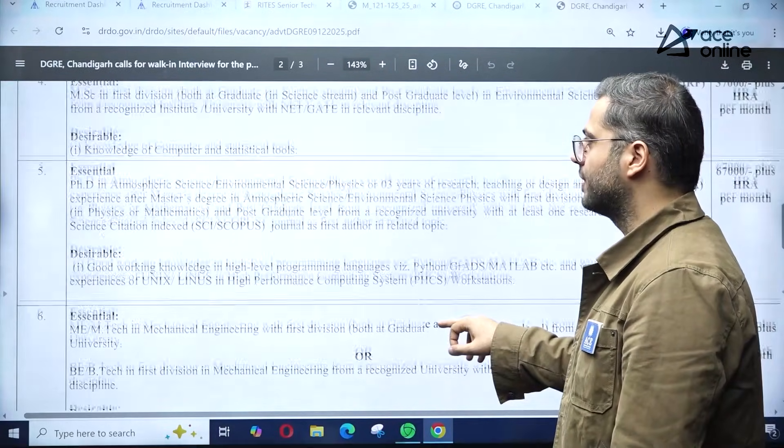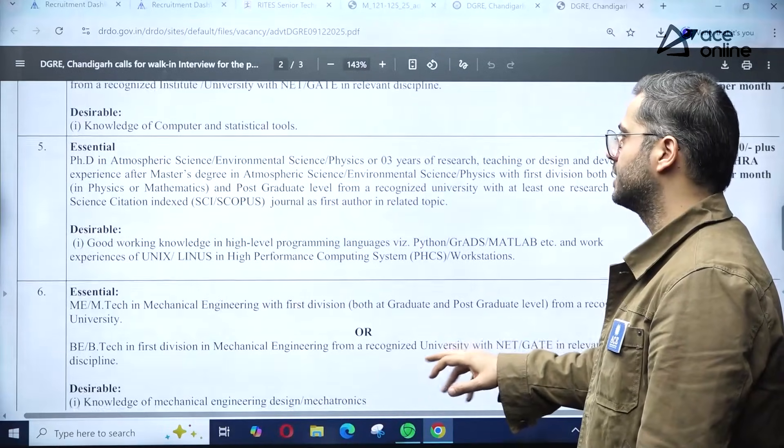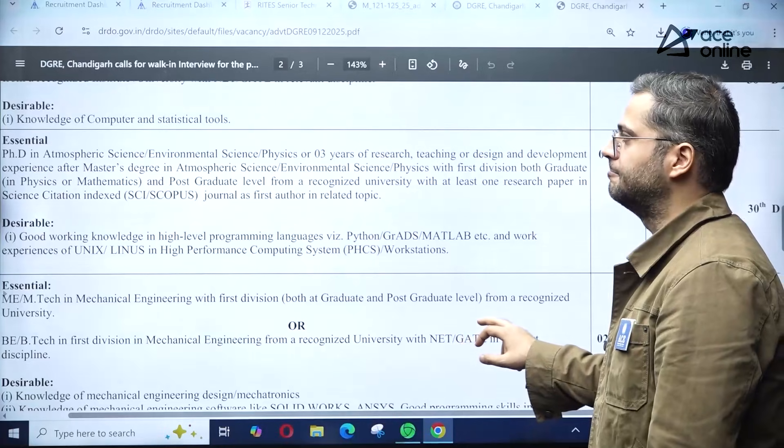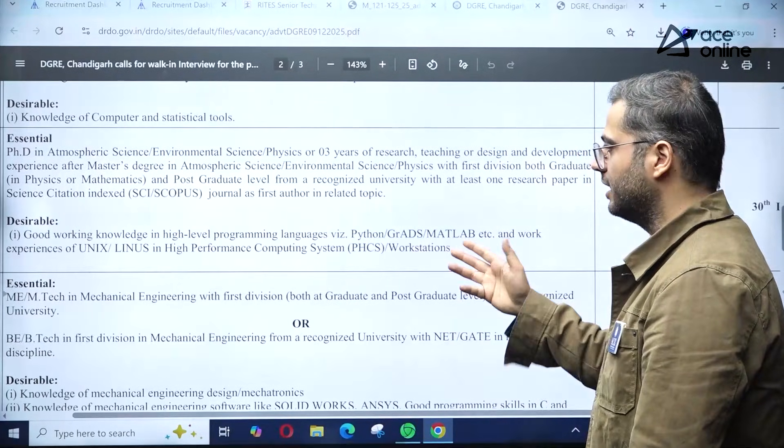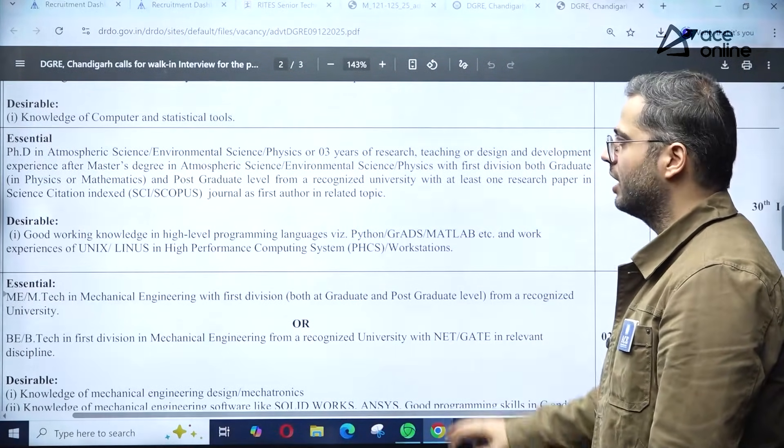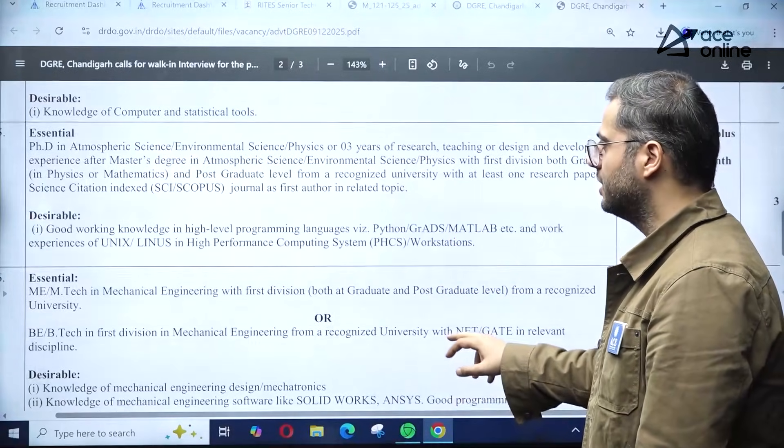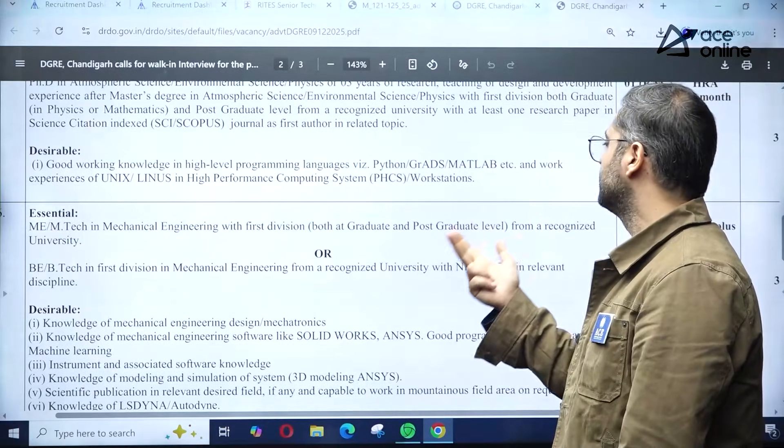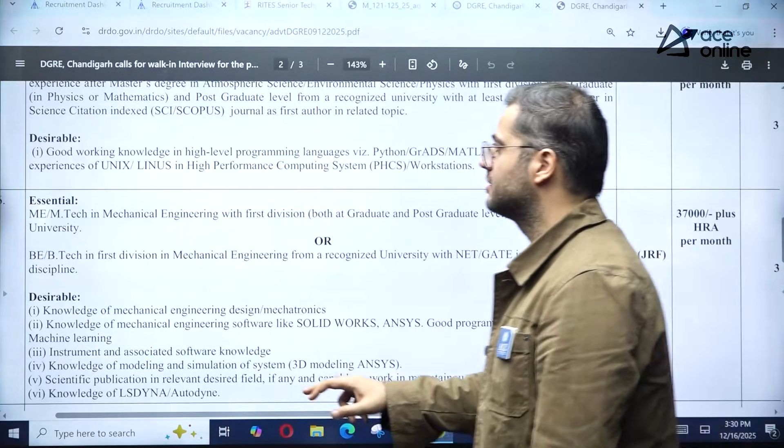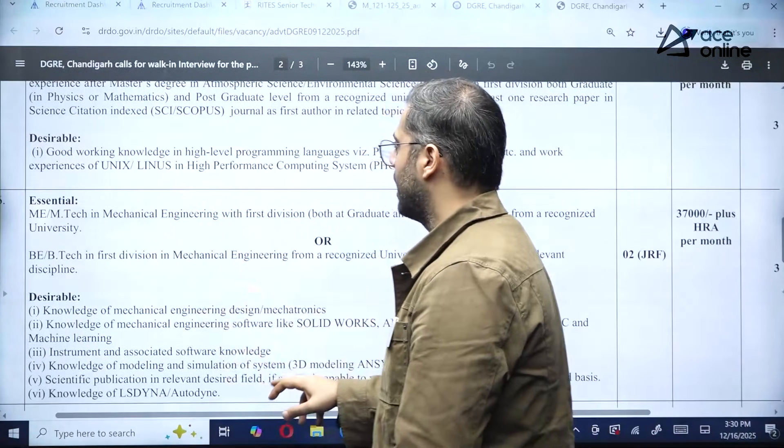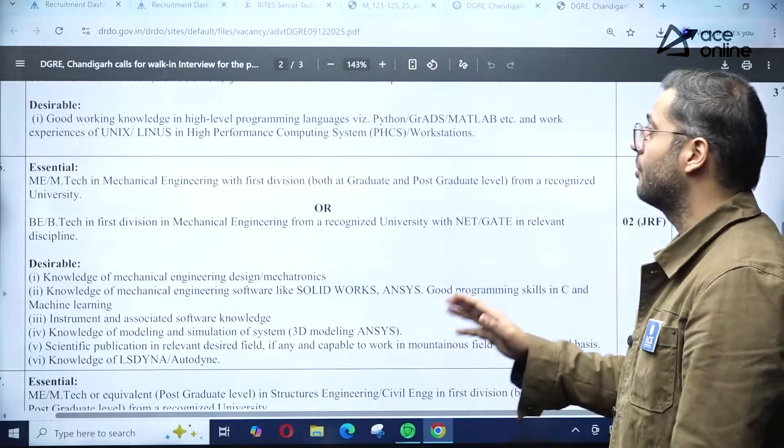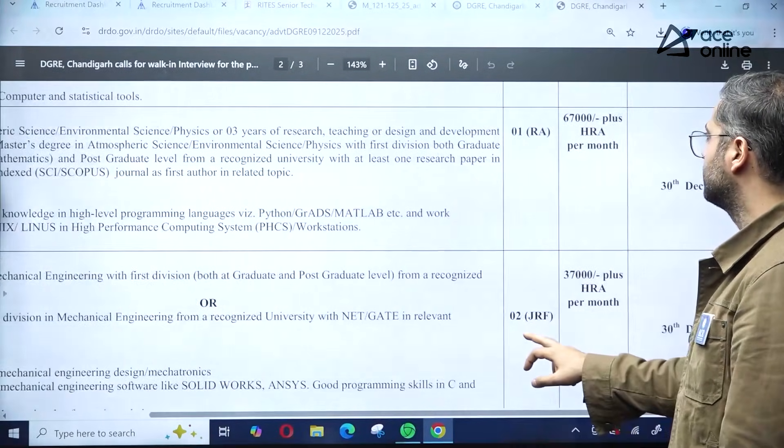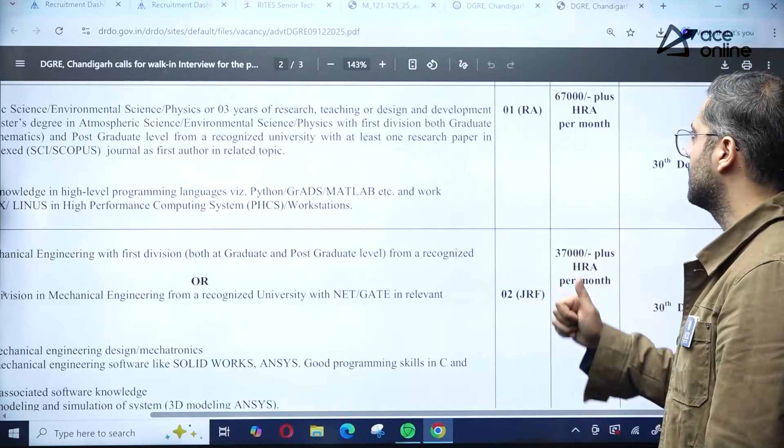PhD in Atmospheric Science, Environmental Science, or Physics, or three years of research, teaching, or design and development experience with a master's degree in the same field. Desirable: relevant experience in programming languages like Python, GrADS, MATLAB, experience in Unix, Linux, and high-performance computing systems or workstations. One Research Associate position is available at 67,000 plus HRA per month.